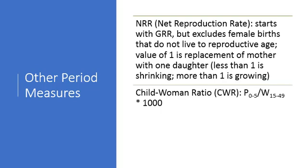The net reproduction rate goes another step beyond the gross reproductive rate and only focuses on those female births that survive past the age of one, because infant mortality does claim a large number of births. So the net reproductive rate is going to be a little more accurate in terms of predicting future reproduction rate. Another useful measure is the child-woman ratio, which has to do with the population of children age zero to five relative to the population of women in childbearing years, with a wider definition of that from 15 to 49.